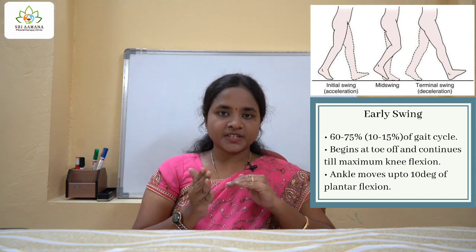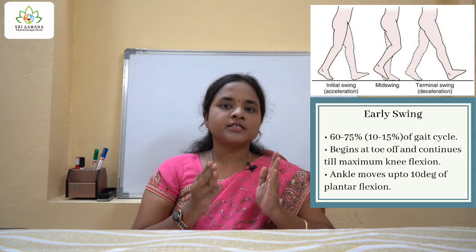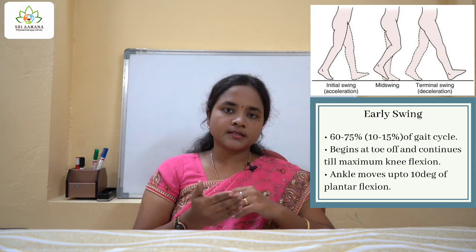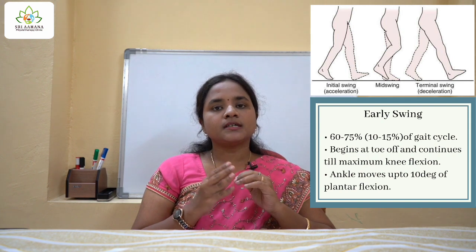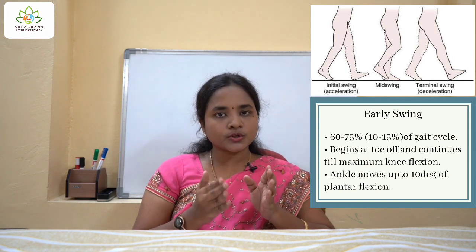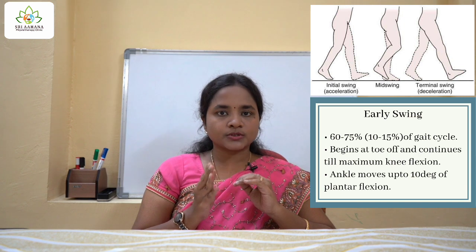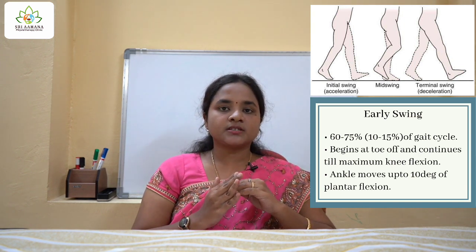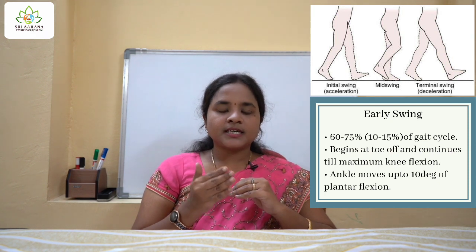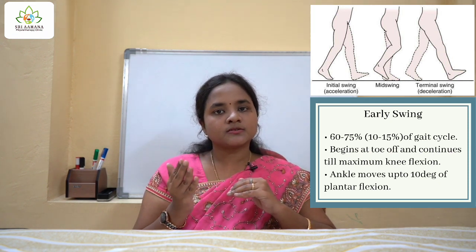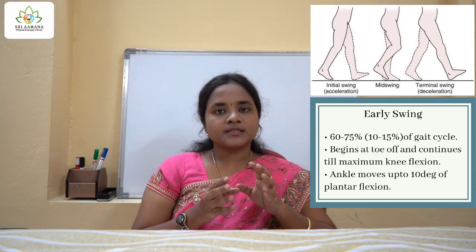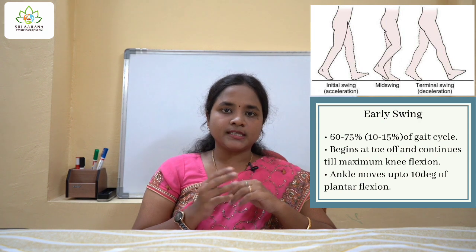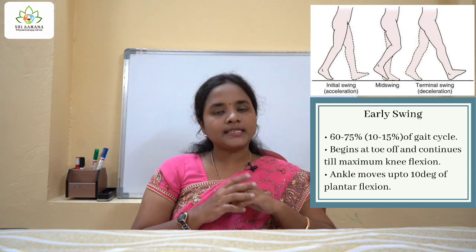60 to 75% of the gait cycle is the early swing phase. Here in the early swing, the knee goes into flexion. It starts when the toe pushes off the floor and the knee falls into flexion, and continues till the knee attains the maximum flexion of 60 degrees required for walking. This phase is termed as the acceleration phase, initial phase, or initial swing.